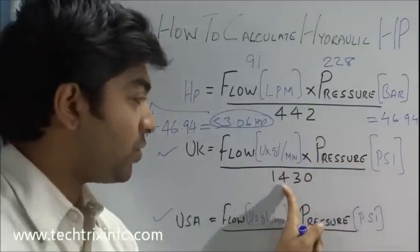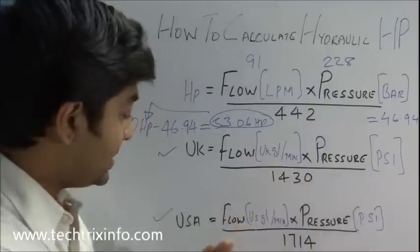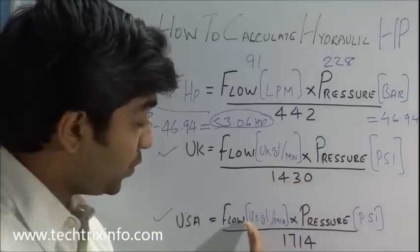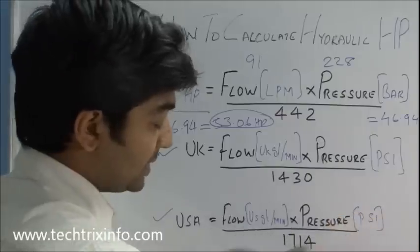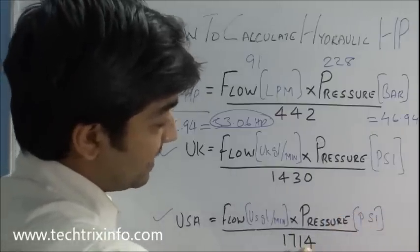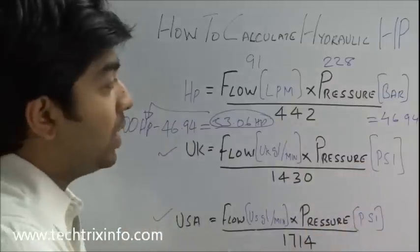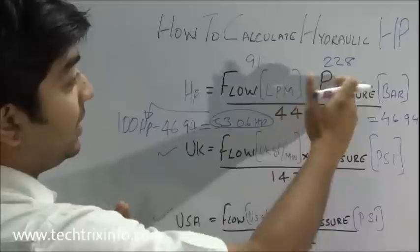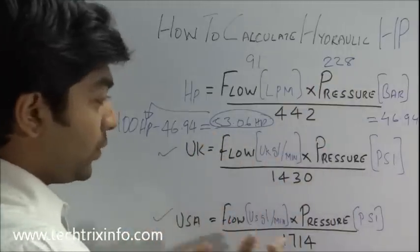And in USA it is the formula: flow in US gallons per minute times pressure in PSI divided by 1714. So that's how the hydraulic HP is been calculated basically in UK and US.